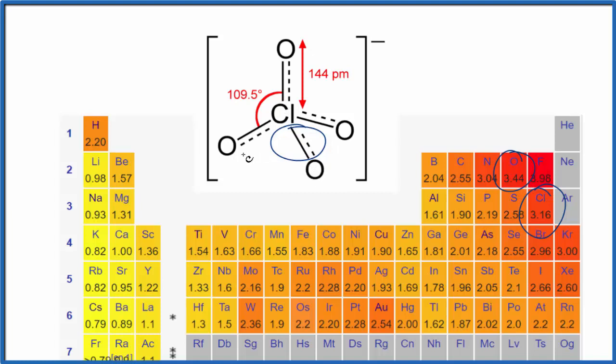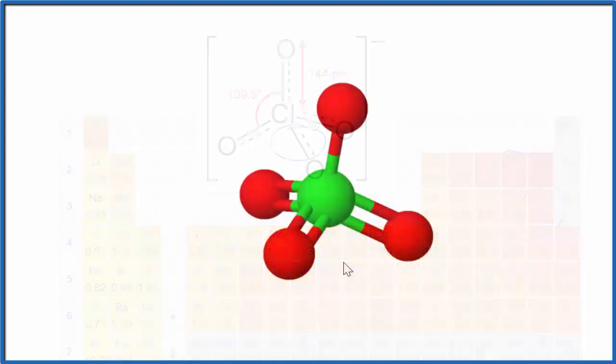But to understand the overall dipole, whether it's polar or not, we need to look at the molecular geometry. Here is our perchlorate ion. Remember the whole thing has a 1- ionic charge.